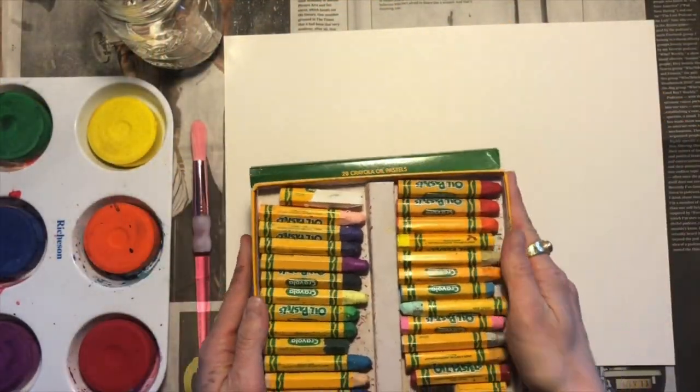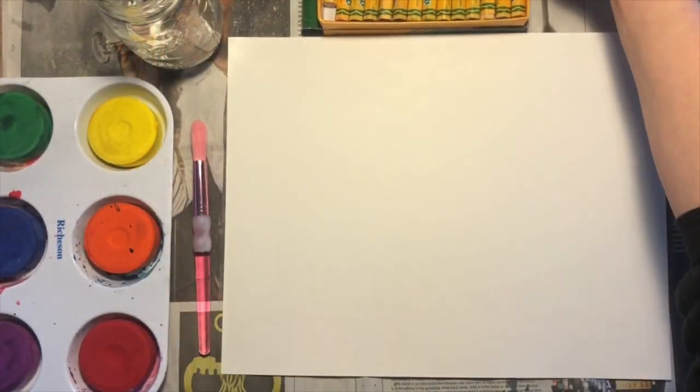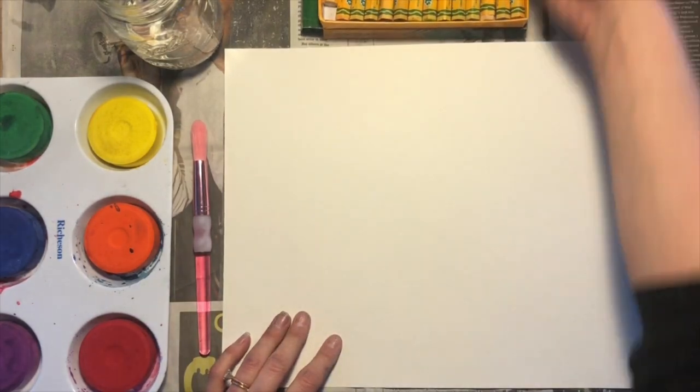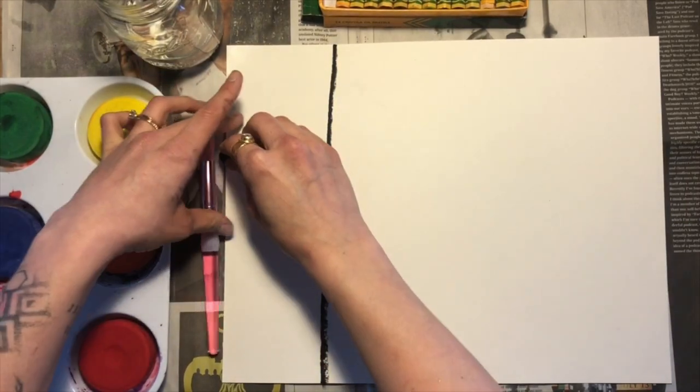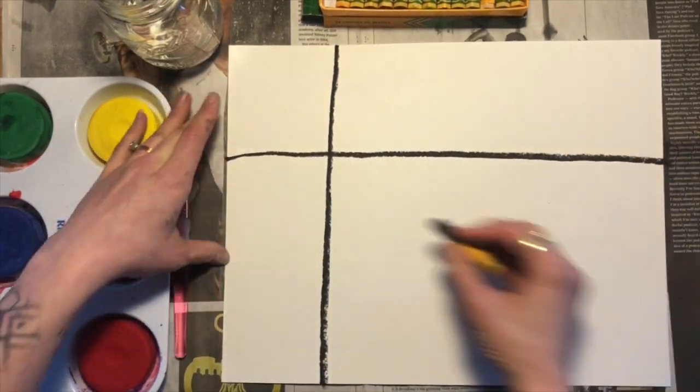For the beginning part of this project you're gonna start using oil pastels. If those are too messy for you or you don't have any, crayons are totally fine. I start with black and I make five lines: vertical, horizontal, diagonal, a big ol' zigzag, and finally a curvy line.